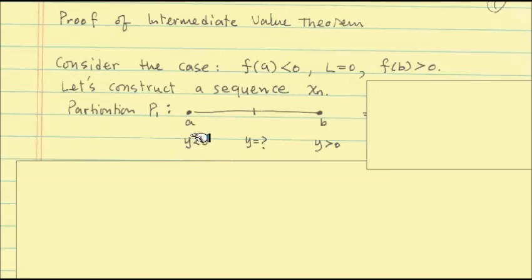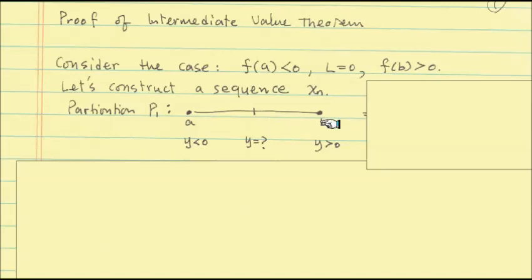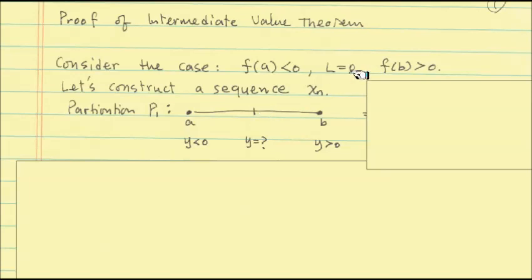Here is the first step. We are looking at the interval [a, b] and we are going to divide it into two pieces. So we have three points now — that collection of three points is called a partition. P1 is a collection of three points: a, the midpoint, and b. We are going to evaluate the function at those three points. We know the endpoint a gives a negative value, and the other endpoint b gives a positive value. What about the middle one? It is either positive or negative. If it happened to be exactly zero, we got the answer right there.